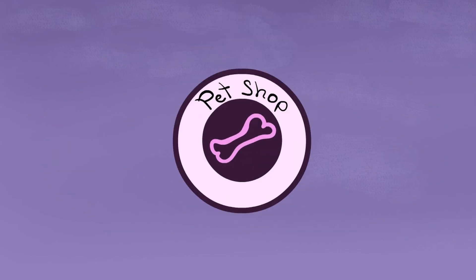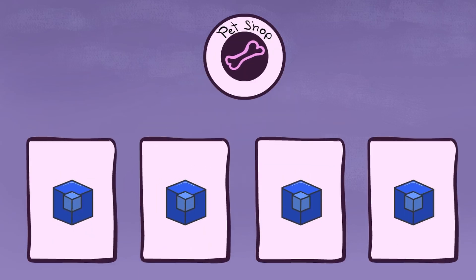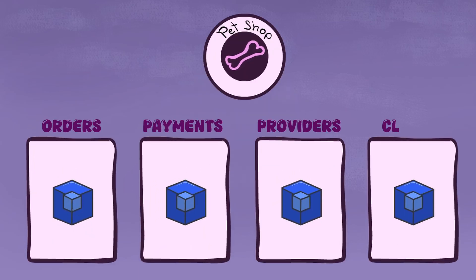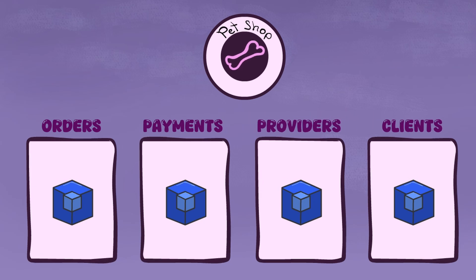This breakdown can be performed based on business capabilities, which refer to distinct functions that a business performs to achieve a specific outcome. For example, we can decompose our pet shop business capabilities into services for orders, payments, providers, and clients.